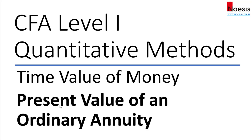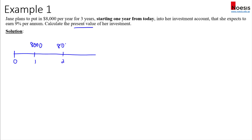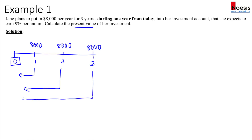Now let's look at the present value of an ordinary annuity. Example one: Jane plans to put in eight thousand dollars per year for three years, starting one year from today, into her investment account. She expects to earn nine percent per annum. We need to find the present value at time zero — that is, discount the cash flows back to today.